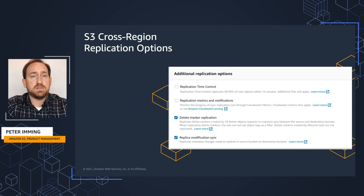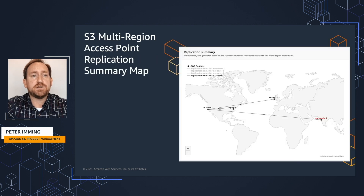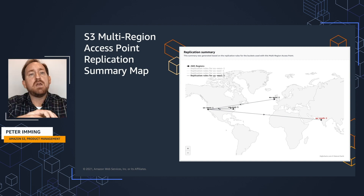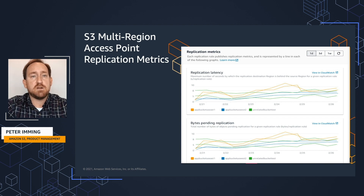These are the same options you get with S3 replication today. The difference is the multi-region access point configuration lets you do that for multiple buckets, all from a central location. Once those rules have been configured, they're deployed out to all of the source and destination buckets. Once completed, you'll see a replication summary map indicating how the replication has been configured — whether it's directional, bi-directional, or one-to-many. You can then begin monitoring your replication process if you've enabled replication metrics for those rules.